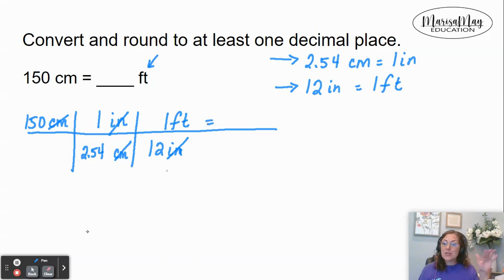Now, when you're ready to do the numbers, multiply across the top: 150 times one times one is 150. Then across the bottom, 2.54 times 12 gives us 30.48.